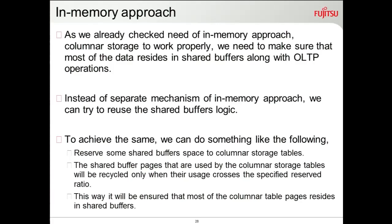To avoid this, we are thinking of using a stable buffer approach — reserving a portion of shared buffers for in-memory columnar store tables. This is just a concept not yet implemented. For example, if I have 10 GB of shared buffers, I might reserve 7 GB for columnar tables. That 7 GB is only used for columnar tables, while the remaining 3 GB is recycled by OLTP. The 7 GB pages will not be touched, so OLAP queries will find most pages available in memory.